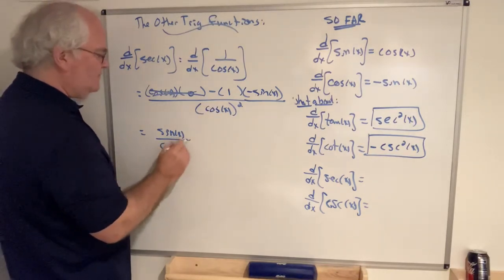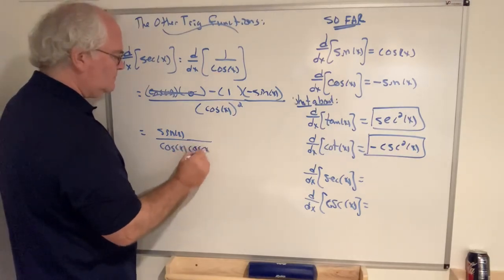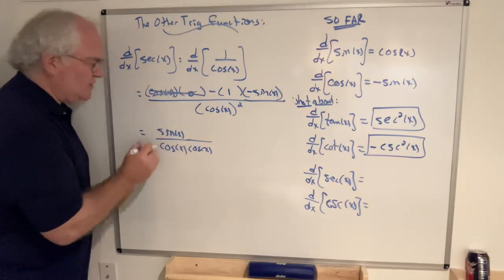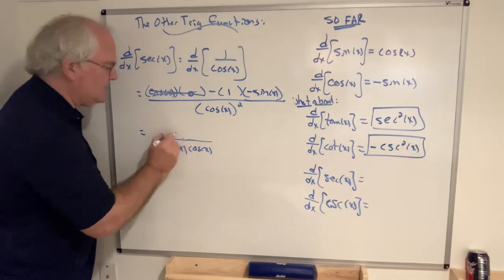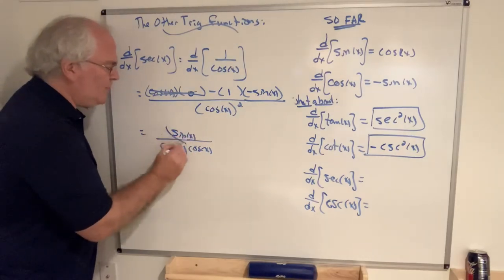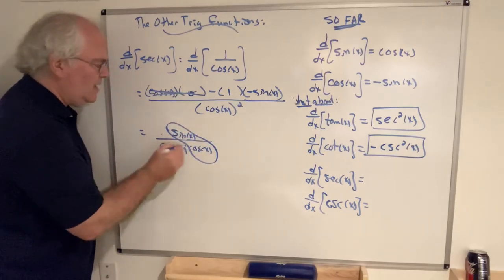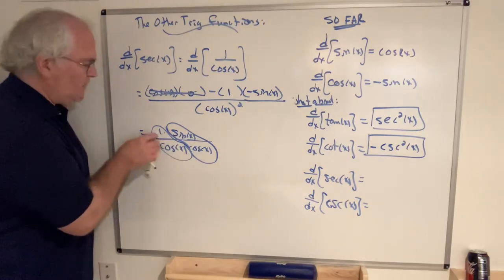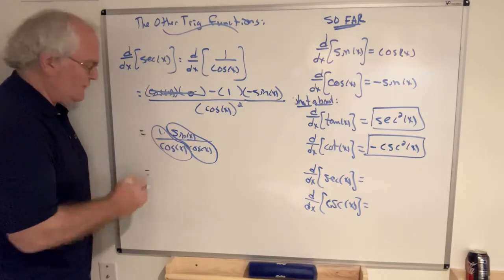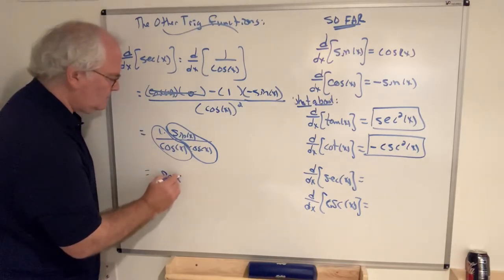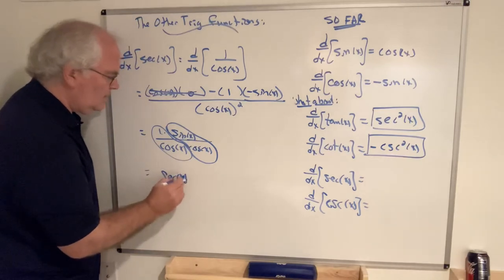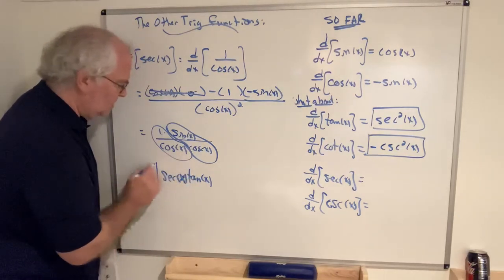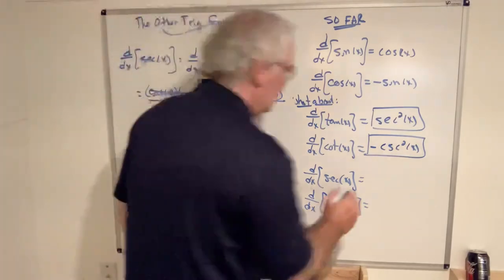It's best to write sine over cosine squared as sine over cosine times cosine. Grouping them in a particular way: one over cosine times sine over cosine. One over cosine is secant, and sine over cosine is tangent. That's the result we're looking for: the derivative of secant is secant tangent.